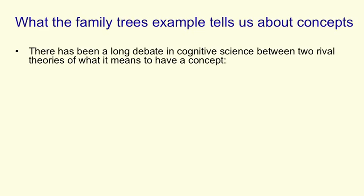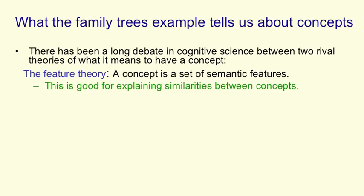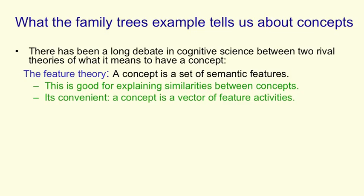There's been a long debate between two rival theories of what it means to have a concept. The feature theory says a concept is a big set of semantic features. This is good for explaining similarities between concepts, and it's convenient for things like machine learning, because we like to deal with vectors of activities.